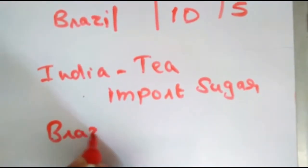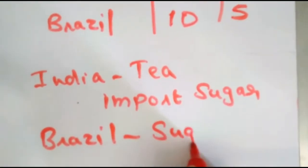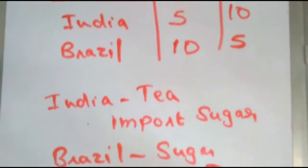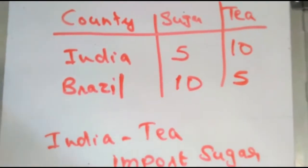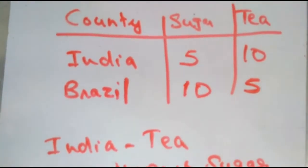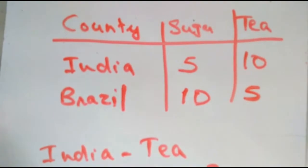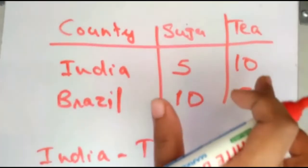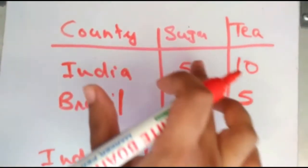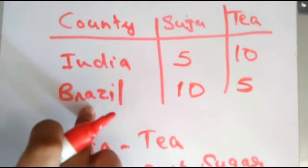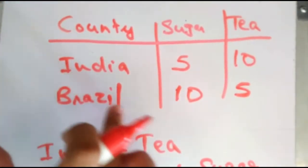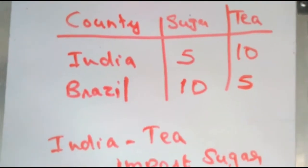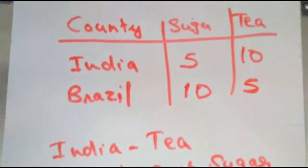Brazil should produce sugar and import tea from India. Absolute advantage theory states that a country should produce the good which can be more efficiently produced in their country, and should import the good which can be less efficiently produced. India is more efficient in producing tea, so India produces tea and imports sugar from Brazil. Brazil is more efficient in producing sugar, so Brazil produces sugar and imports tea from India.